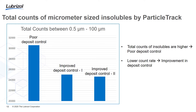Integrating the area under those curves to find total counts between half-micron and 100-micron aggregates confirms that total insoluble counts are higher in the poor deposit control case. A lower count rate is associated with better dispersancy, detergency, and anti-oxidancy, giving an improvement in deposit control. The question then is: are these numbers really representing the aggregates we're talking about? Let's examine them with ParticleView in their natural state without dilution.